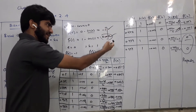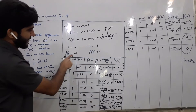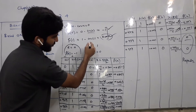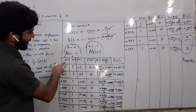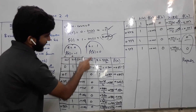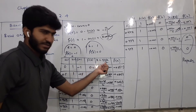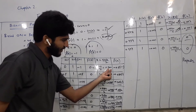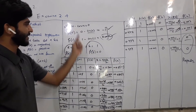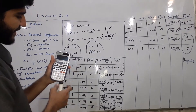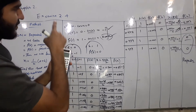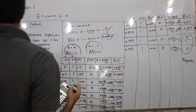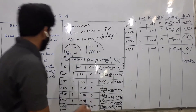ایک negative آ گیا، ایک positive آ گیا. a negative والا ہے، b positive والا. Function of a = minus 1، function of b = 0. فارمولا: x1 = (a + b) / 2 = (0 + 1) / 2 = 0.500. یہ 0.5 ہم نے function میں put کیا: 0.5 minus cos(0.5) = minus 0.5. چونکہ یہ negative آیا، تو اس کی جگہ a کو replace کریں گے: a = 0.5 لکھا.